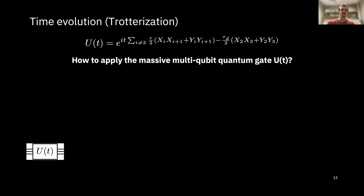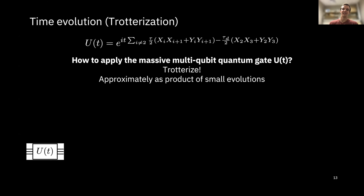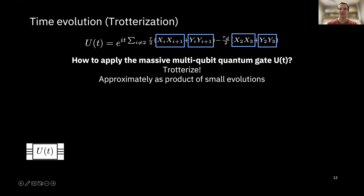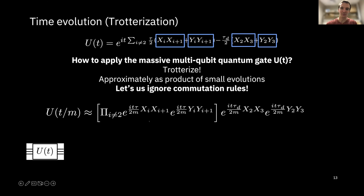One technique is trotterization — more formally the Suzuki-Trotter decomposition. The idea is we evolve for a little bit of time, and in that approximate limit we can ignore some of the commutation rules that would normally apply. We split the sum into a product — that's the approximation. What makes the approximation valid is that we only evolve for a small time, T/M, where M is the number of Trotter steps. As we increase M, the approximation becomes more and more accurate.